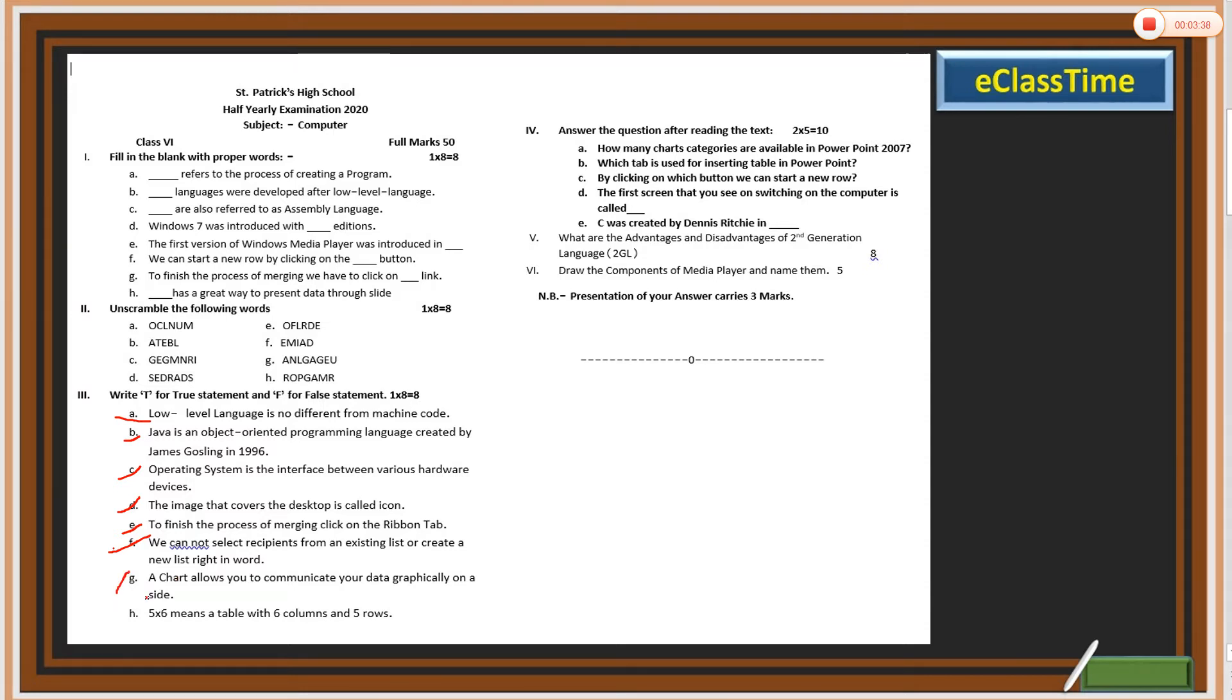G: A chart allows you to communicate your data graphically on a slide, true or false. H: Five into six means a table with six columns and five rows, is it true. So please find out. These questions are also there in the book, so if you refer through, you will find them. Number four: answer the questions after reading the text.